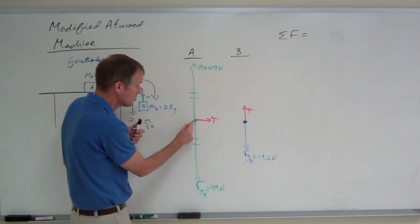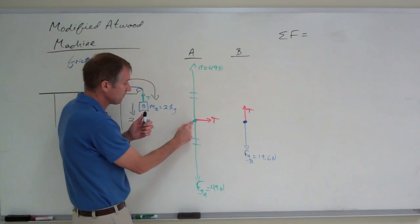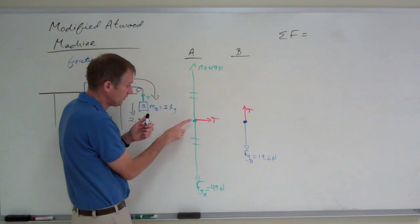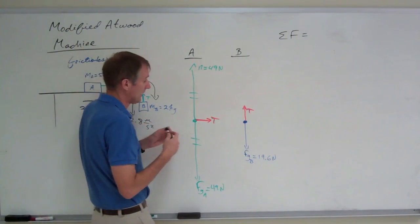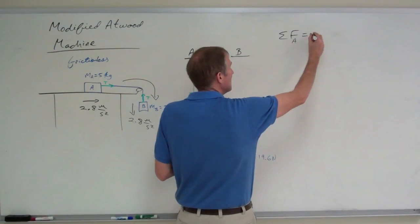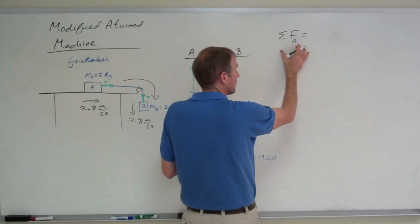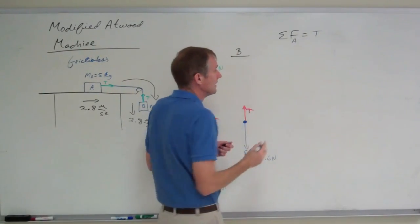Now, if you look at just block A, it has three external forces, two of which that I've drawn in green are balanced. That's the unbalanced force acting on block A. So the net force acting on block A is the tension.